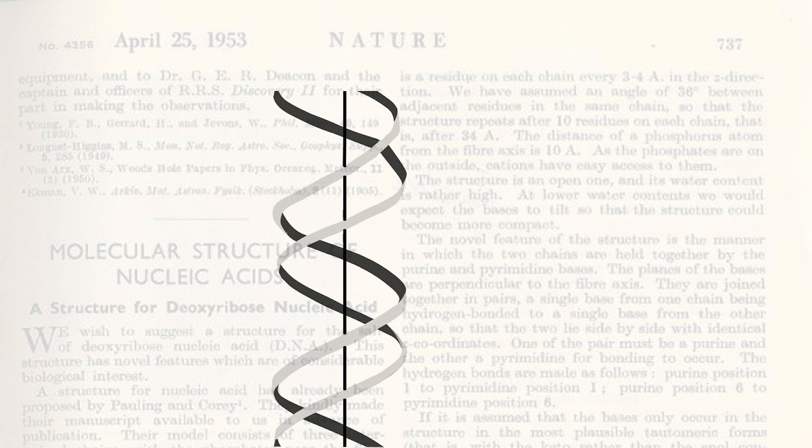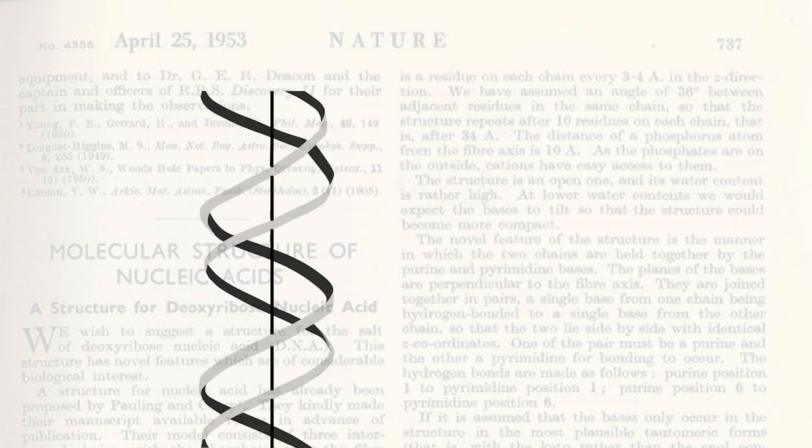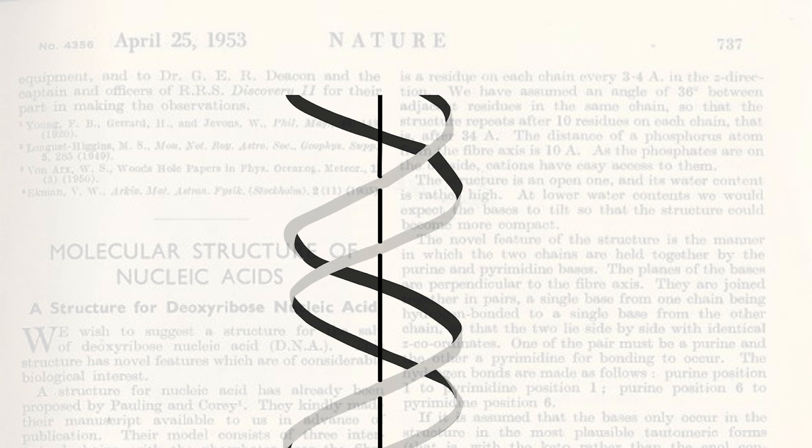And from the measurements made by Franklin and Wilkins, they knew the basic dimensions of the helix. They were eager to fit everything known about DNA into an accurate model. But questions still remained. How do the helices fit together? How are the nitrogen bases arranged?